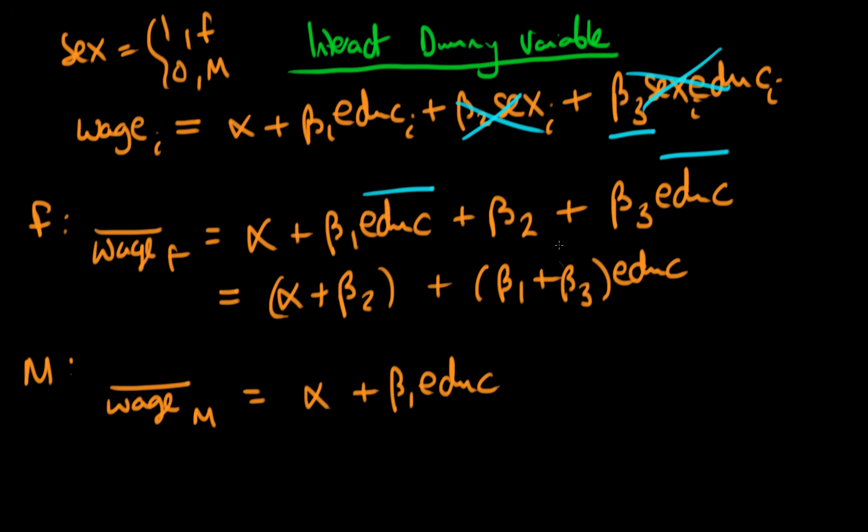Okay, so what does beta three represent? Well, notice that the only difference between these two specifications in terms of the education variable is that essentially the partial effect of education for females has been boosted by an amount beta three relative to the males. So what does that mean? Well, if beta three was greater than zero, it means that the additional effect of one more year of education for females was in fact greater than that for males.